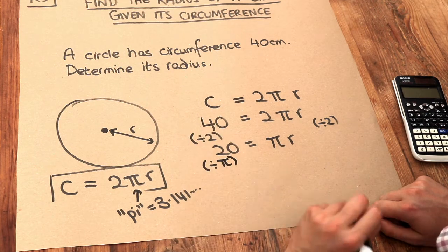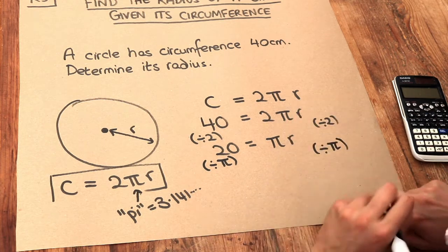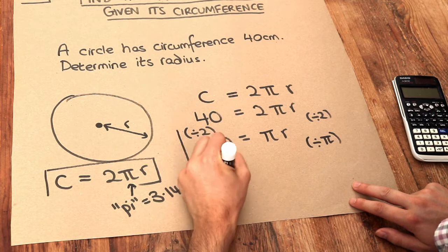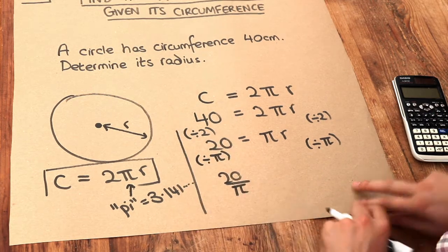So I'm going to divide the left-hand side by π, divide the right-hand side by π. And then you get 20 divided by π, which we could just write as 20 over π, because the over just means divide by.